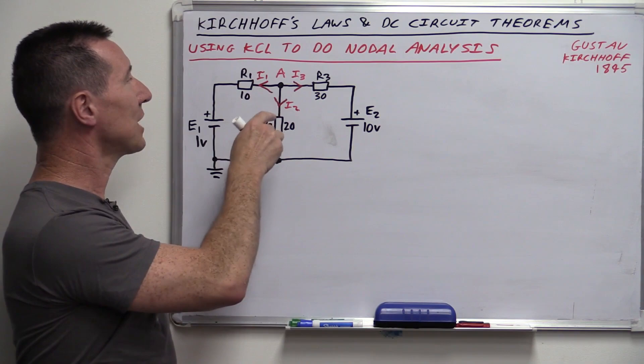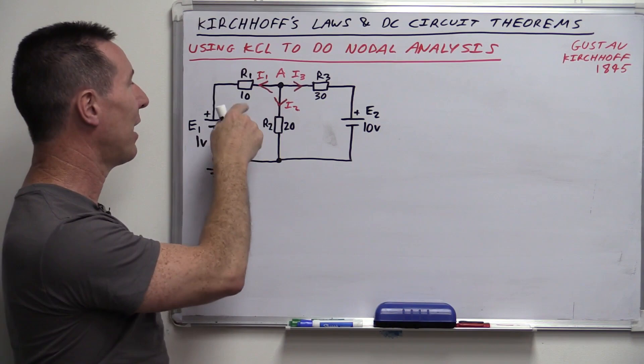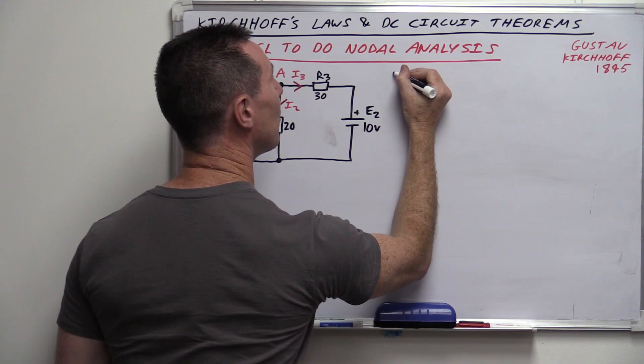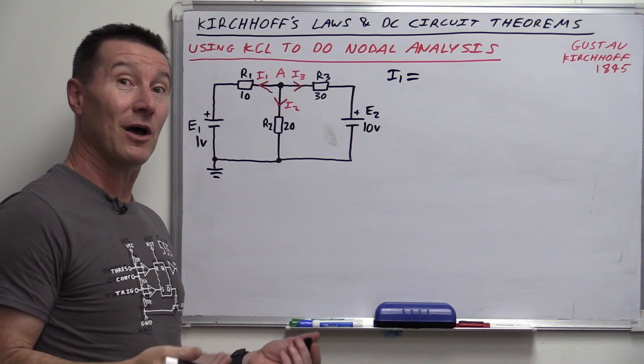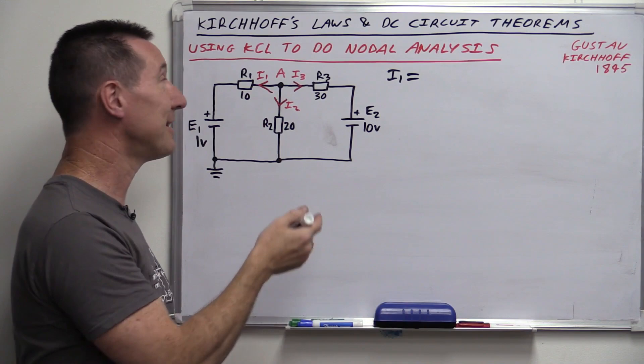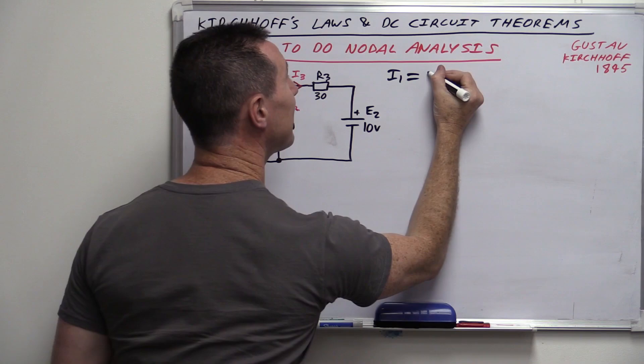We'll draw direction arrows. We start by deriving the equations for each current, labeled I1, I2, and I3 — keeping it consistent so R1 corresponds to I1, et cetera. So we start deriving our equations. I1 flows through R1. Using Ohm's law, I equals V over R. The current is flowing from node A, which is more positive, toward E1. So I1 equals (VA minus E1) divided by R1 — that's the voltage difference across the resistor divided by R1.